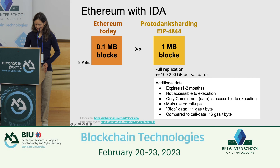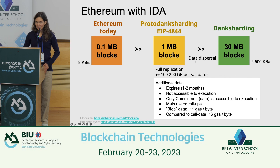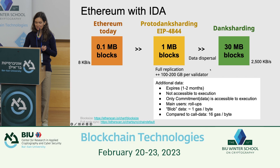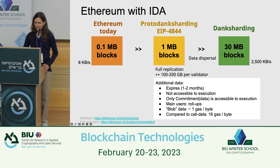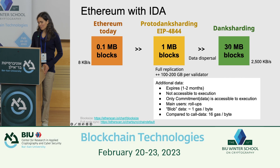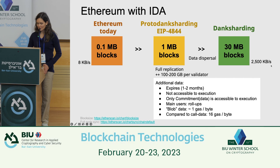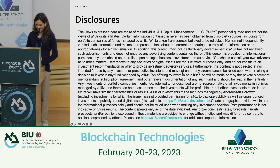The plan is to then move to full data dispersal, replacing full replication with distributed storage. Validators will store about the same amount, but since data is dispersed with efficient erasure coding you can increase block size even more. The final goal is to reach 30-megabyte blocks, taking throughput from 8 kilobytes per second to more than 2000 kilobytes per second without much additional burden on validators. That's a remarkable improvement.